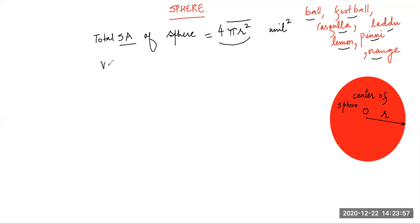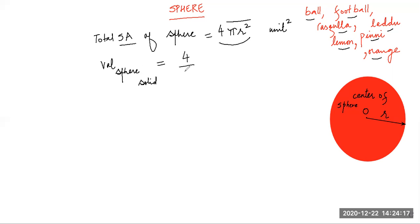Volume of a sphere is the 3D space inside it. It can be the volume of a solid sphere or a hollow sphere. The volume of a solid sphere is 4/3 πr³.